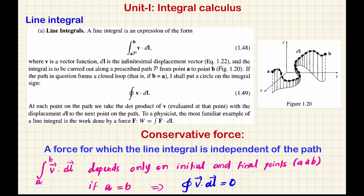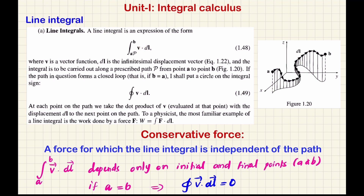Define the path to integrate. Here you have a vector function from point A to point B. Here we have a dot product — the dot product will give you a scalar quantity. That scalar quantity is what we integrate, and the integration is carried over the path.